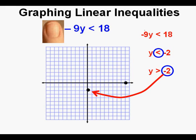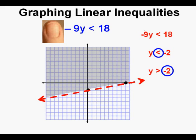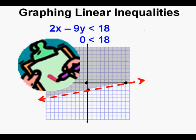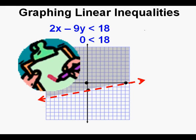Now we draw the boundary line. What type? Since it's 'less than' — not equal to — that would be a dashed line. Which way do we shade? Greater than means up, so we shade above this dashed boundary line. All that remains is to check. Using (0, 0) again, we replace x with 0 and y with 0: 2 times 0 minus 9 times 0 is 0. Is 0 less than 18? Yes. And since (0, 0) is inside the shaded region, we know that we have shaded correctly. Check.